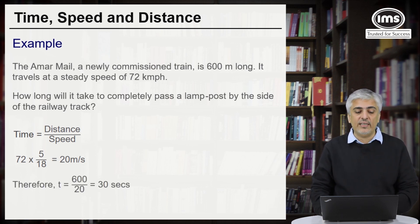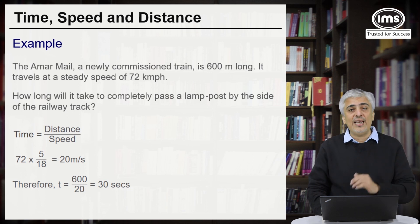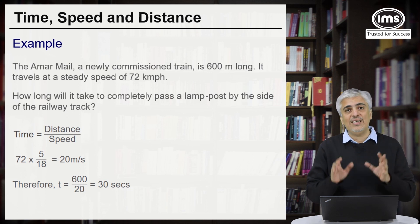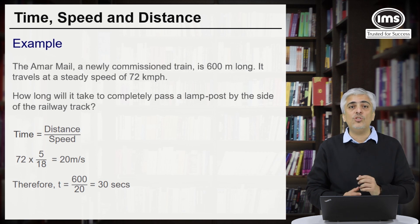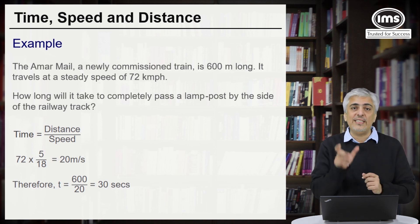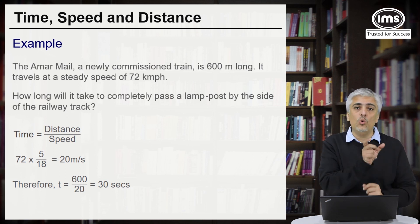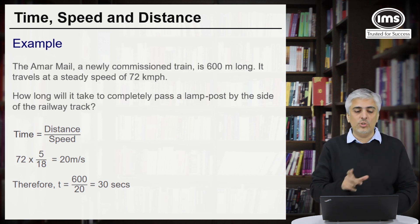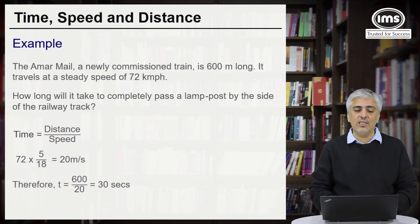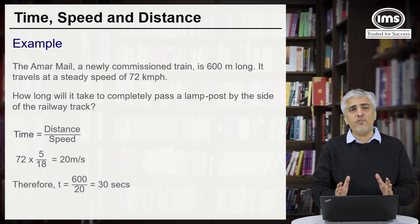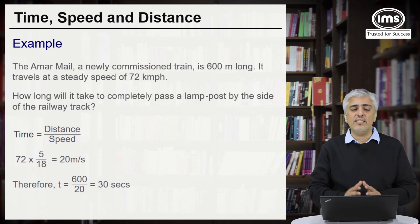What will be the time taken? Time taken equals distance divided by speed. The train has to cross the lamppost, which means it has to cover its own length. So, time = 600 meters divided by 20 meters per second, which equals 30 seconds. That was a straightforward question on trains.